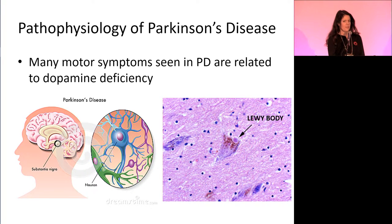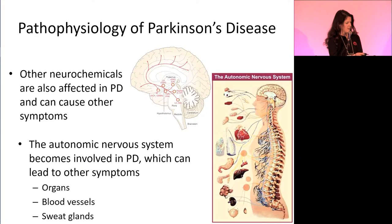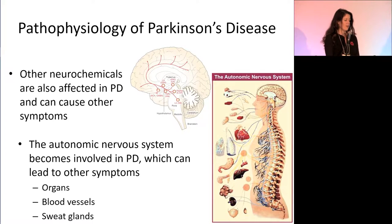You probably know that dopamine is deficient in Parkinson's disease. Dopamine is produced in the substantia nigra, and in PD the neurons in this region die. Before they die, they accumulate a substance called the Lewy body — you can see one highlighted here — which is the pathological hallmark of Parkinson's and really the only way to absolutely diagnose it. Unfortunately, dopamine is not the only deficient neurochemical; acetylcholine and norepinephrine also become deficient. The autonomic nervous system, which controls unconscious bodily functions, is also affected, impacting organs, blood vessels, and sweat glands.